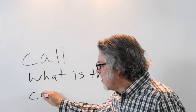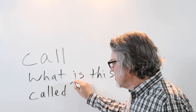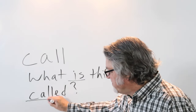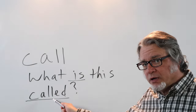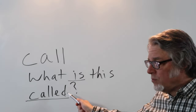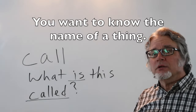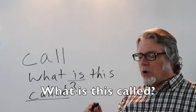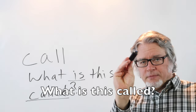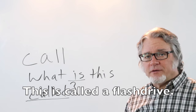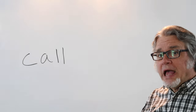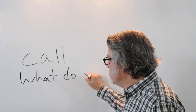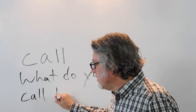What is this called? This question is in the passive voice — here's the verb 'be' and here's the main verb in the form of a past participle. You ask this kind of question when you want to know the name of a thing. For example: 'What is this called?' — 'This is called a flash drive.' The question can also be asked this way: 'What do you call this?'